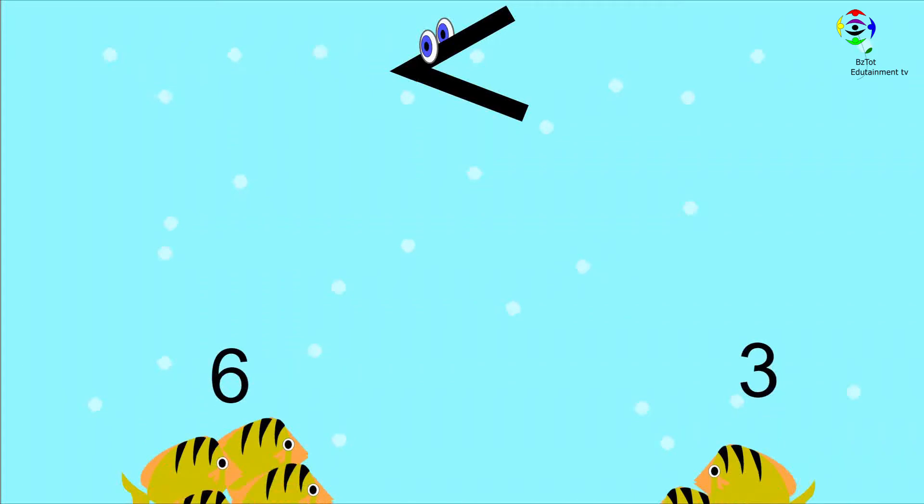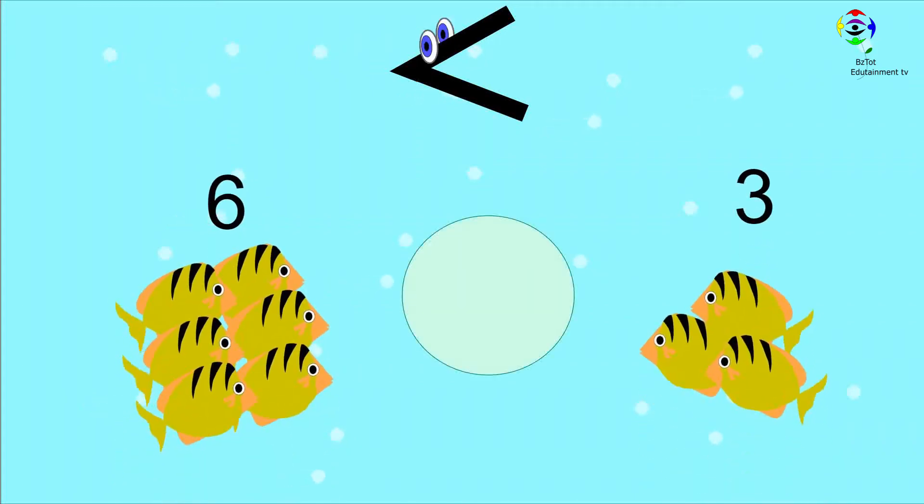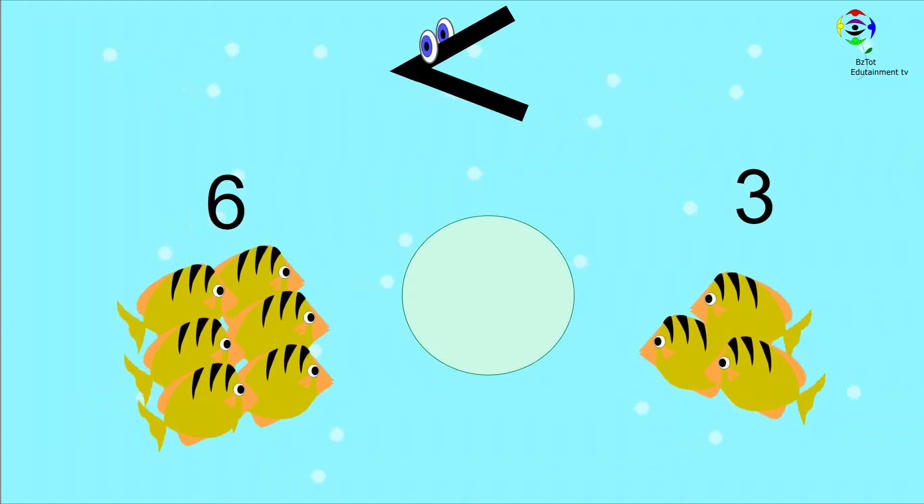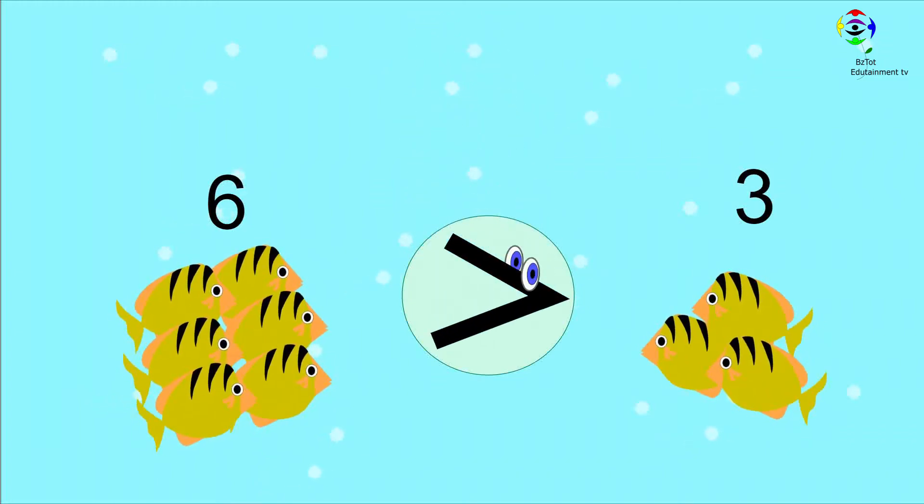Here is another example. We have six fish and three fish. Six is more than three. Therefore, six is greater than three. Mr. Sign is facing the bigger number.